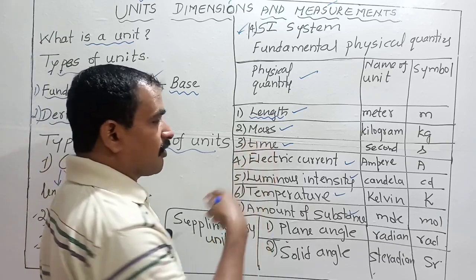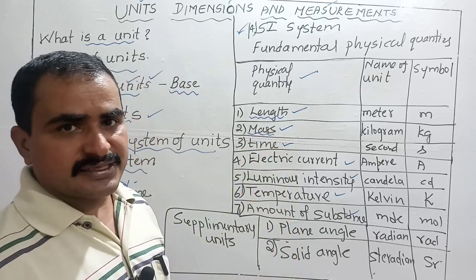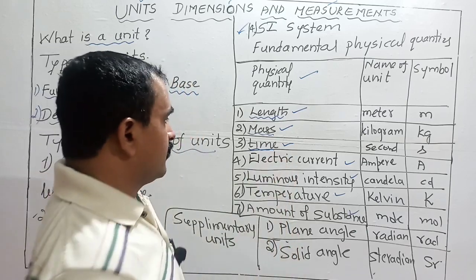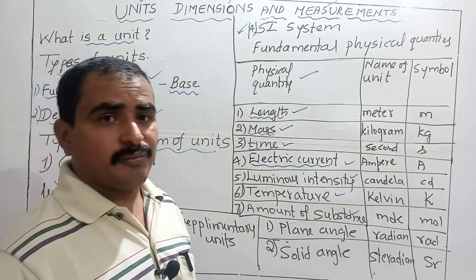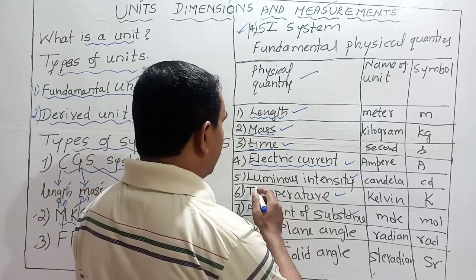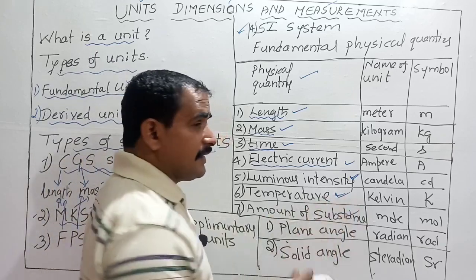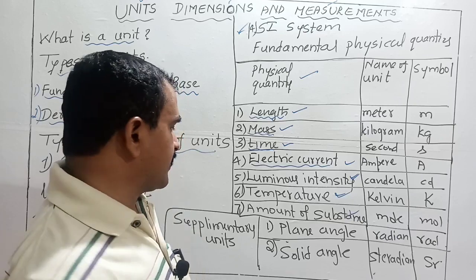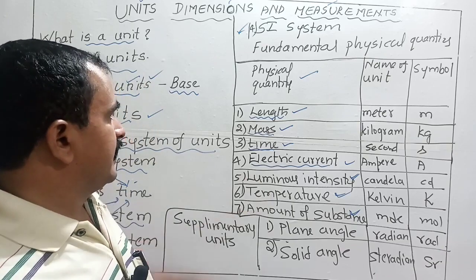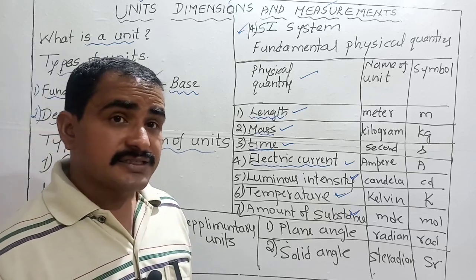Length is measured using a meter scale, vernier caliper, screw gauge, or spherometer. Mass is measured using a physical balance or weighing balance. Time is measured using a clock. Electric current is the amount of electricity used in domestic or industrial purposes. Luminous intensity is the brightness of light. Temperature measures heat. Amount of substance measures a small quantity of any substance.